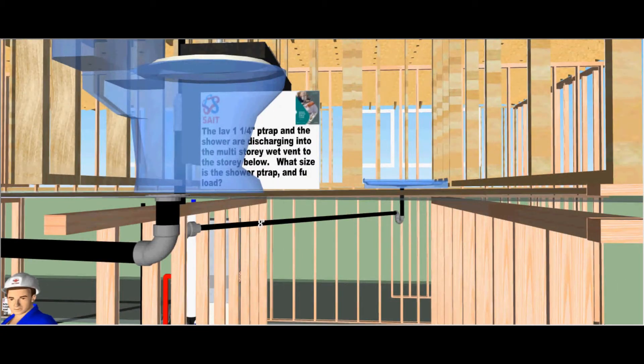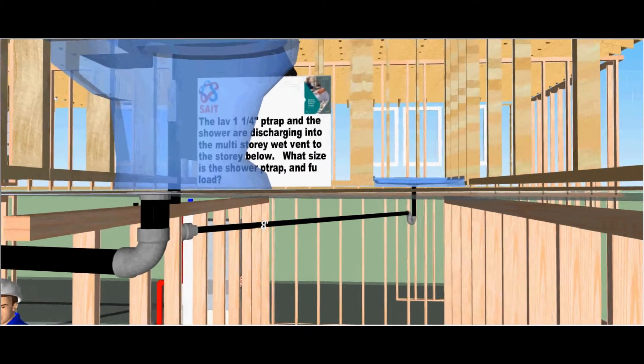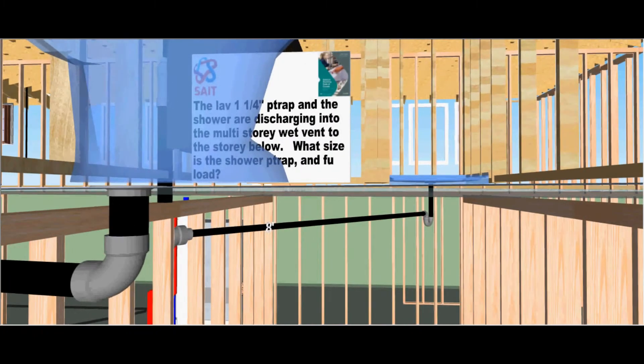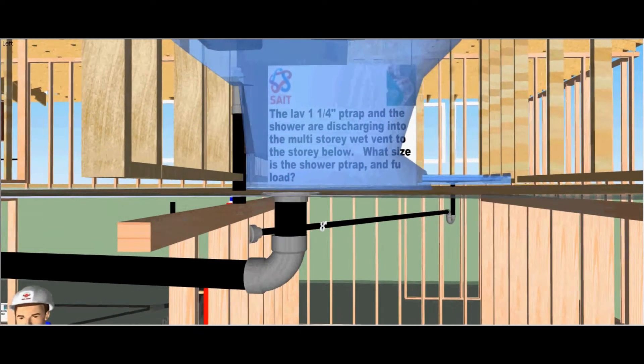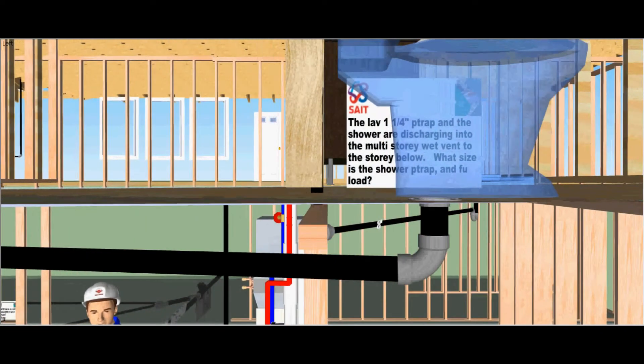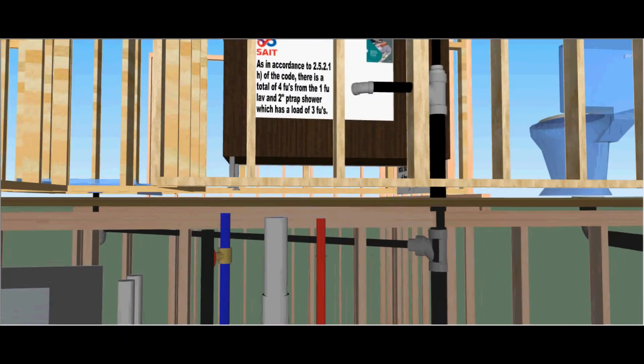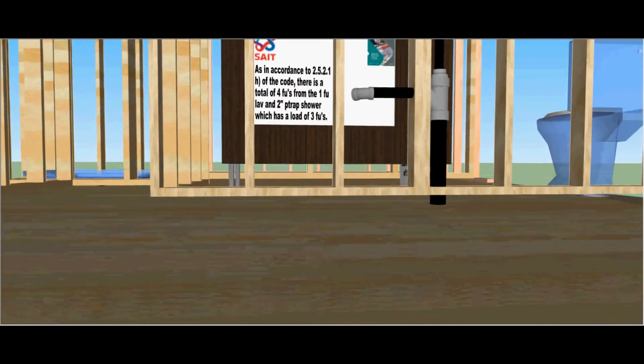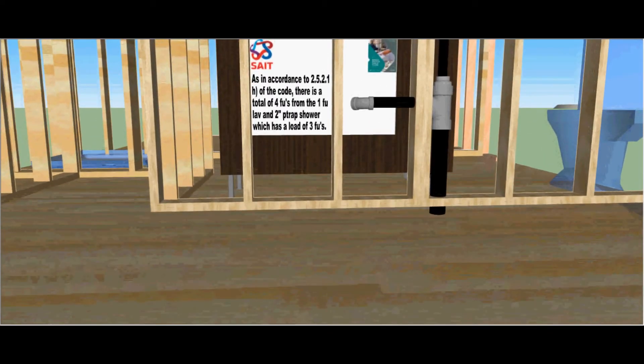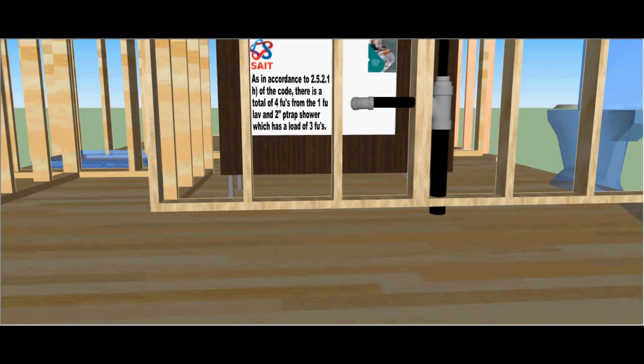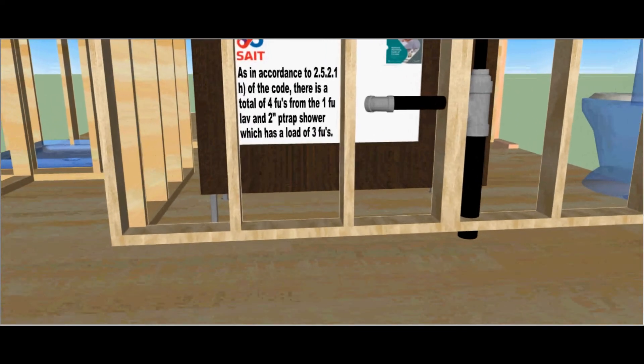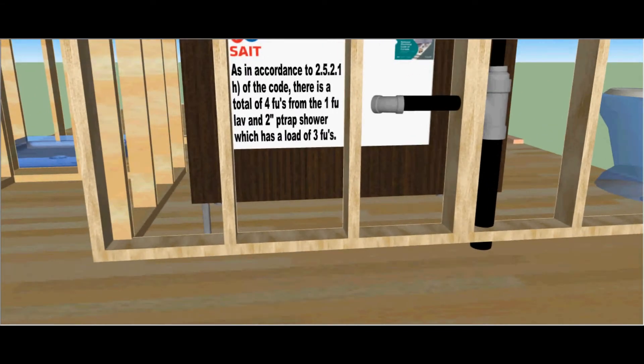The lav or inch and a quarter P-trap and the shower are discharging into the multi-storey wet vent to the storey below. What size is the shower P-trap and fixture unit load? If it's running 8 foot and it's 2 inches, well as in accordance to clause 2521H of the code there is a total of 4 fixture units from the 1 fixture unit lav and the 2 inch P-trap which has a total load of 3 fixture units.